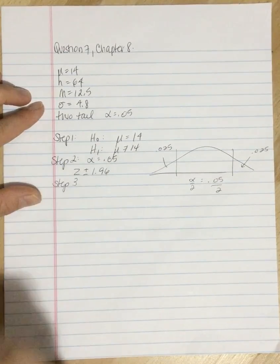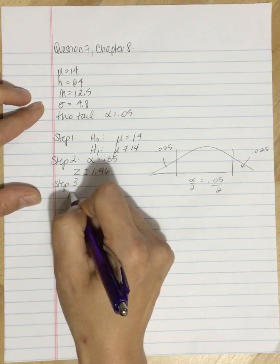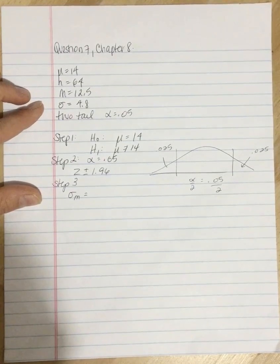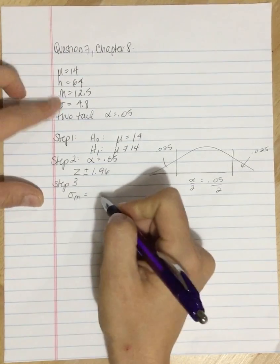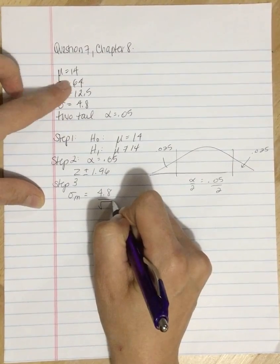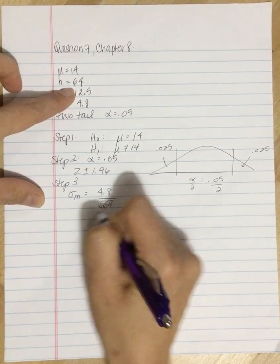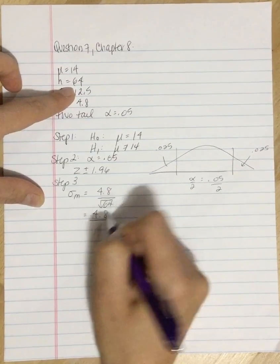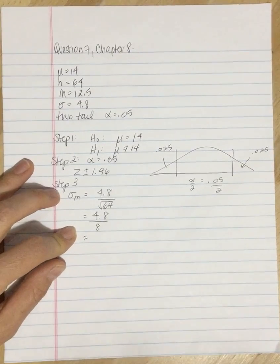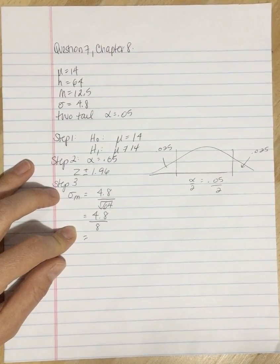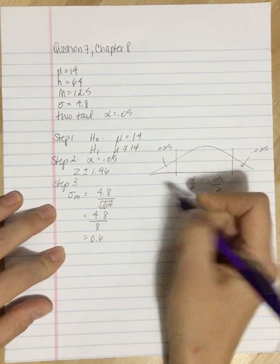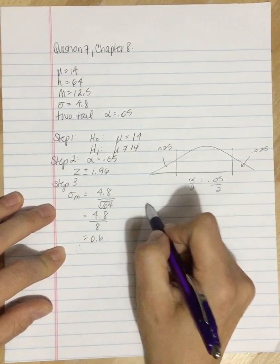Step three is we need to calculate our z-score. Before we can do that, we need to calculate the standard error. We're going to take the standard deviation, divide by the square root of n. So the square root of 64 is 8, 4.8 divided by 8 is 0.6. And we'll plug this into our z-score formula.